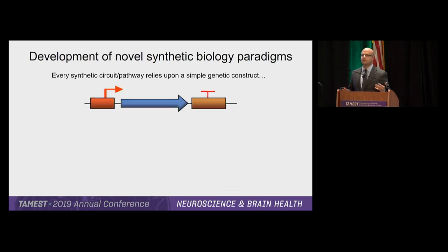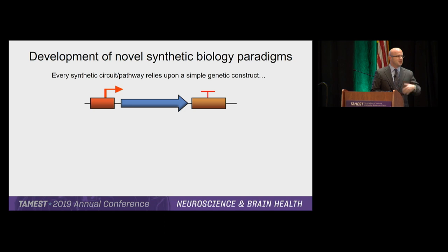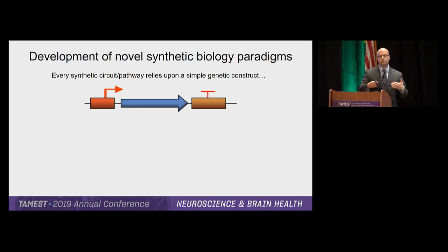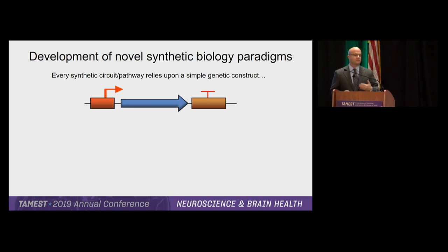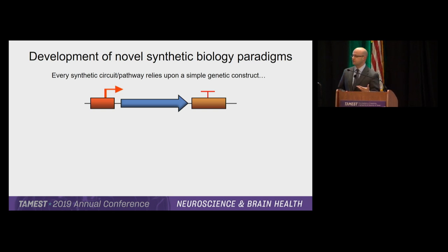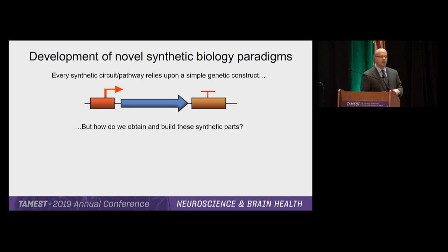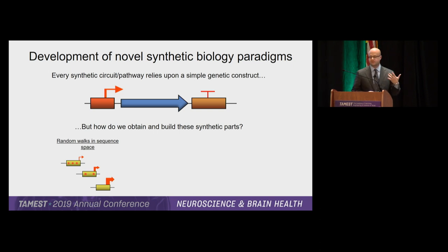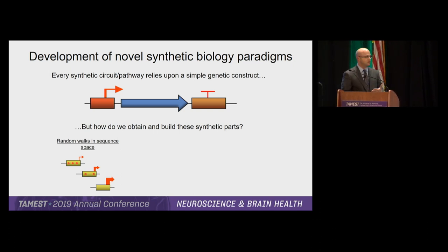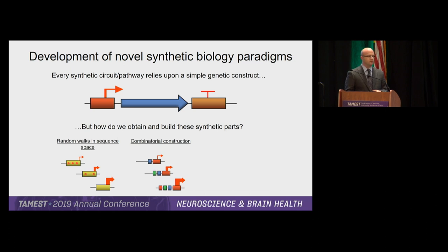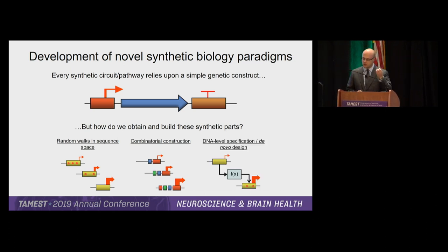Synthetic biology enables us to encode at the DNA level the capacity to turn on and off the genes that we want. We have a simple cassette: a promoter and a terminator telling us how much to turn the gene on, when to stop transcription, and ultimately controlling the half-life of that transcript. We can specify these parts by taking promoters from nature and using directed evolution to improve them, by modular construction, or by DNA-level specification — designing in silico and then synthesizing the part we want.